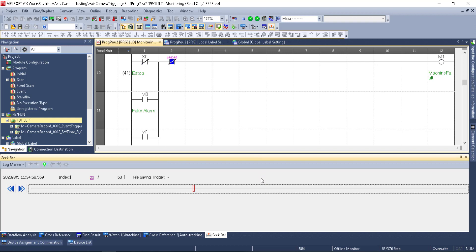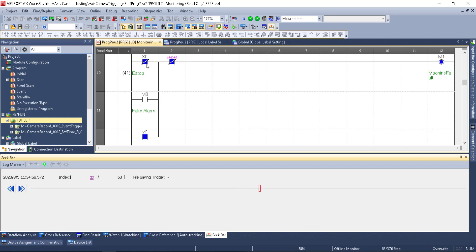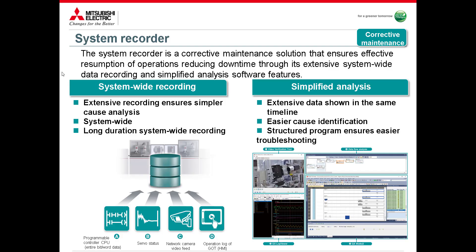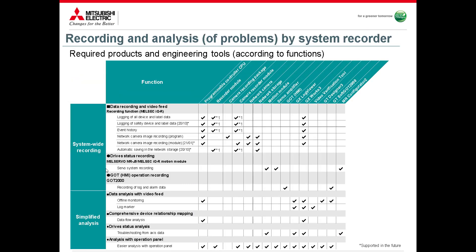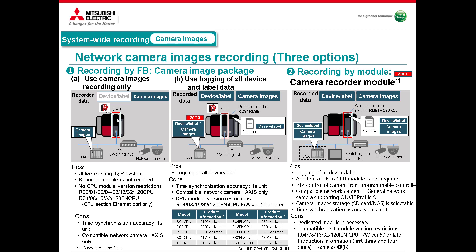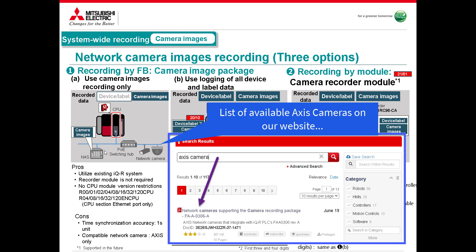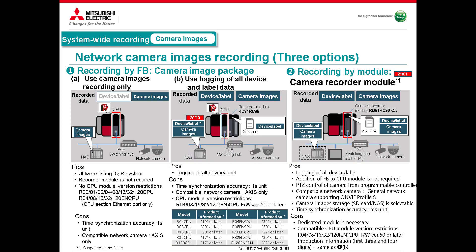If you had an equipment problem — something jammed, a proximity switch or a dog didn't make, the product was incorrect going down the line — you can see that exact moment in time. In GX Works 3 I stop the current offline monitor session and then select the new logging file we just created. We jump right to the point where M1 turned on. As we move through frames one at a time, we can see the E-stop came on and M1 came on. That summarizes system-wide recording and simplified analysis — step 1A. You can test this now with an off-the-shelf CPU and an Axis camera. Thank you for your time — I look forward to showing you steps 1B and step 2 in the near future.